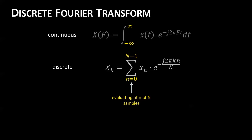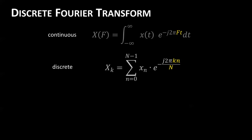The discrete Fourier transform is only slightly different from the continuous version. Rather than running an integral from negative infinity to infinity, we evaluate a summation from the n=0 sample to the N-1 sample. We're still looking for frequency coefficients, but rather than evaluating at any frequency, we're restricted to a set of frequency bins determined by the sampling frequency and number of samples. The kth frequency bin and the nth sample correspond to frequency f and time t respectively.